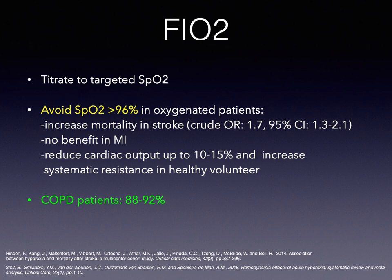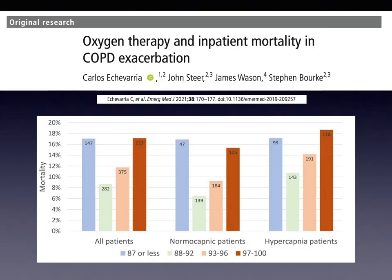For COPD patients, general practice is to target SpO2 88–92%, as there are several reasons not to hyperoxygenate them. For regular patients, target SpO2 92–96%. Evidence from a 2021 Emergency Medicine Journal study on SpO2 ranges and mortality in COPD exacerbation shows that the lowest mortality rate — whether the patient is normocapnic or hypercapnic — occurs when targeting SpO2 88–92%.